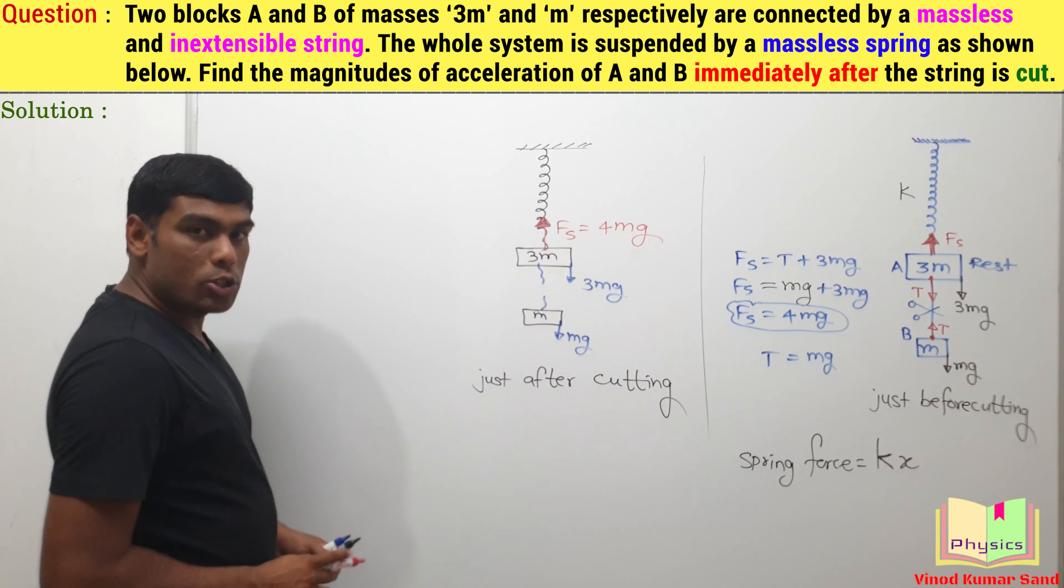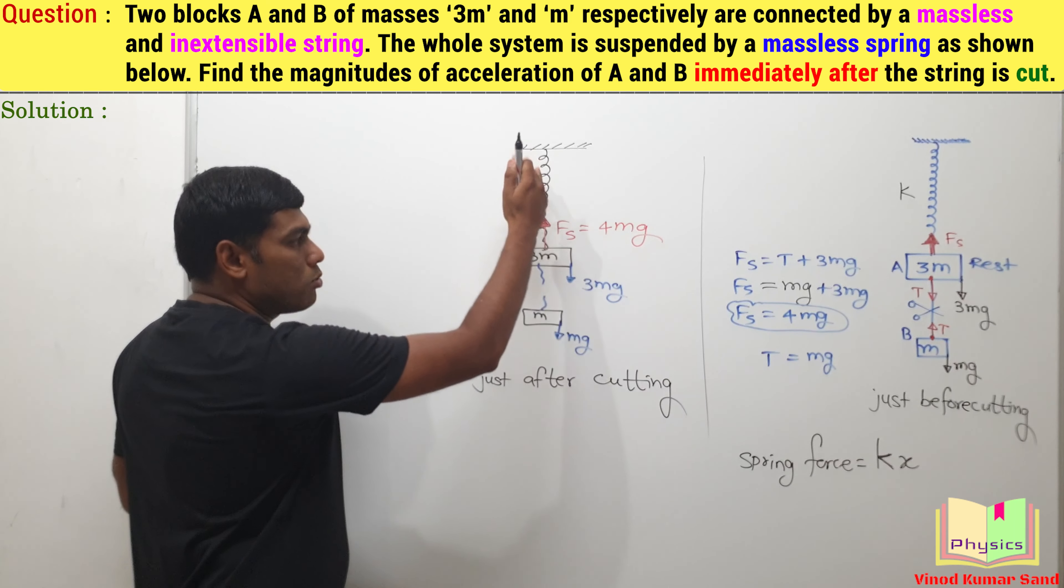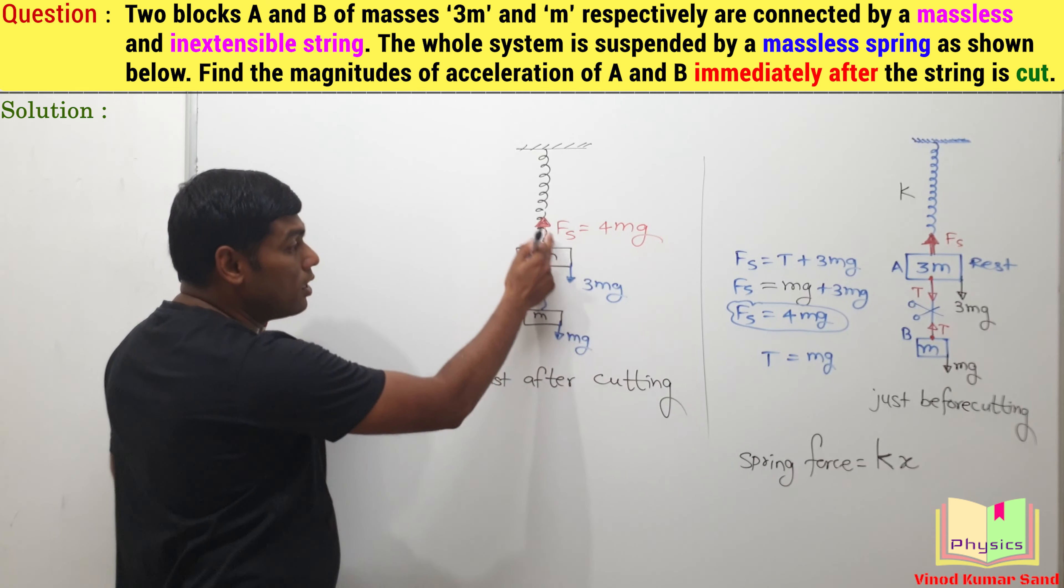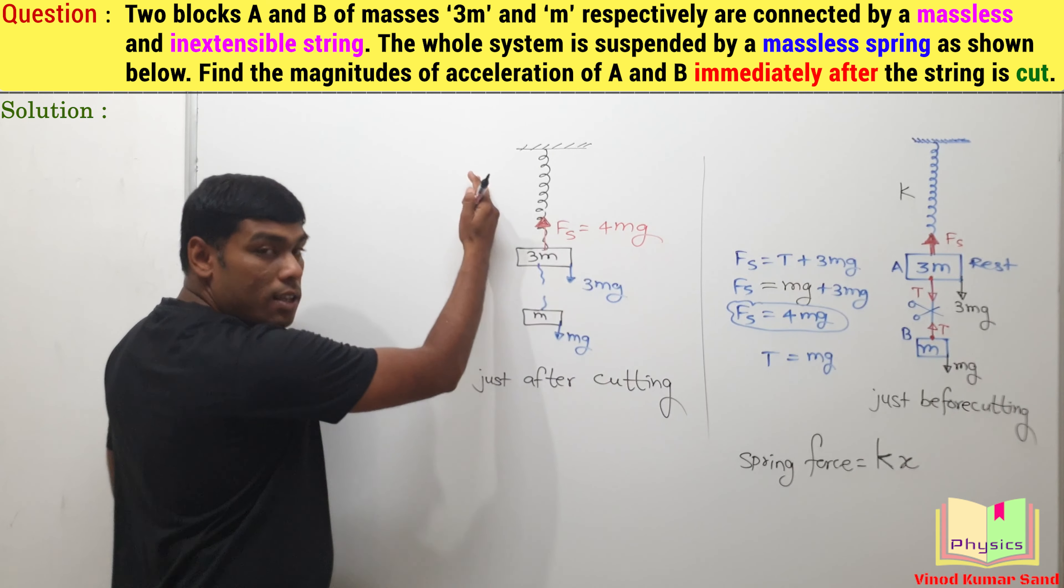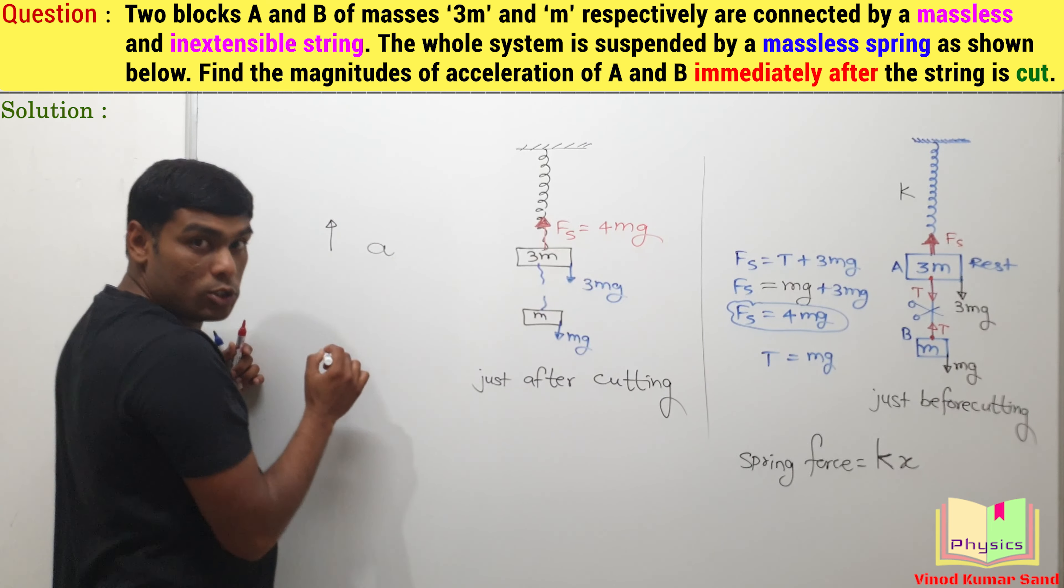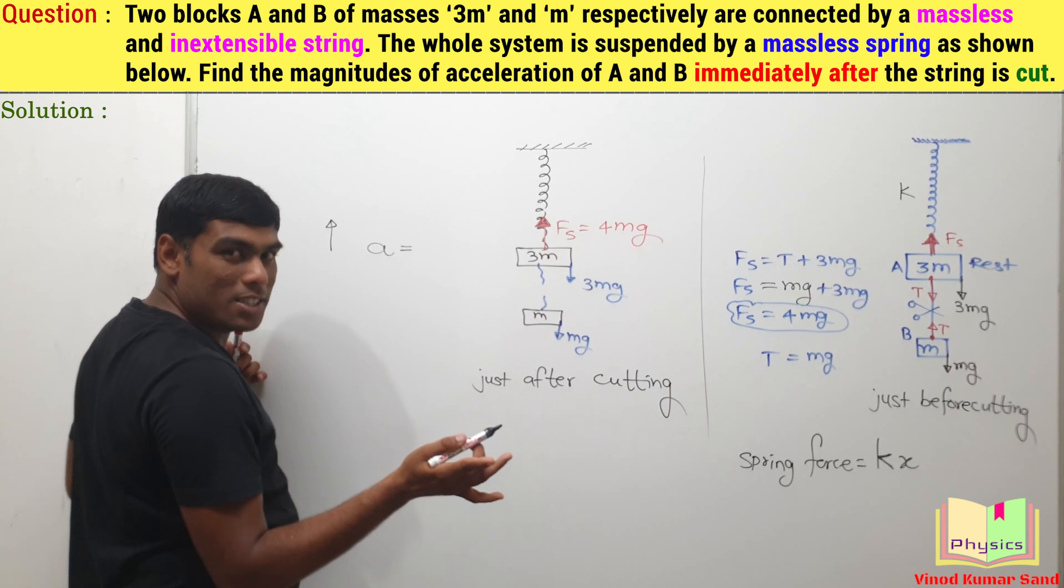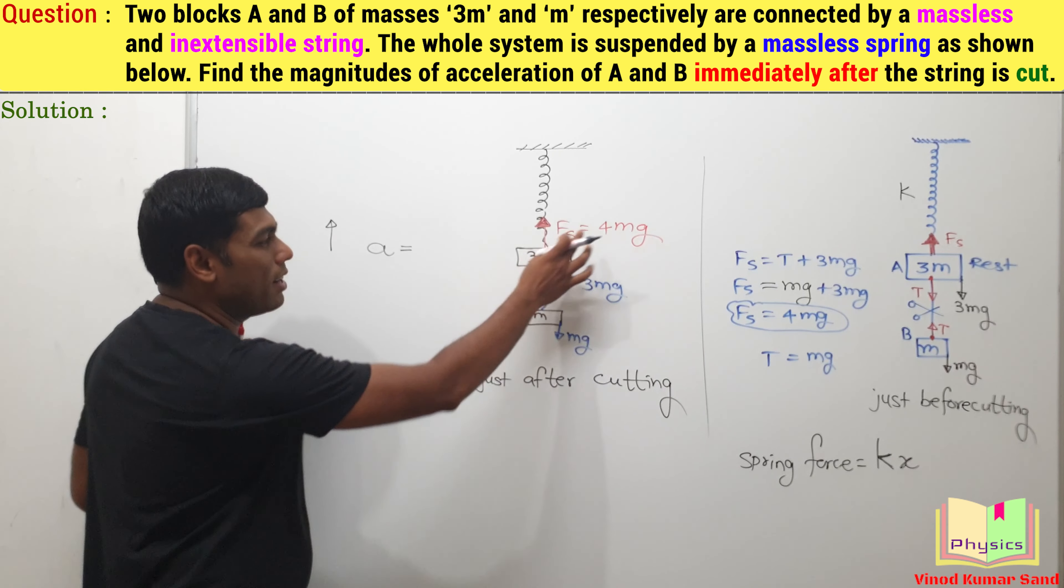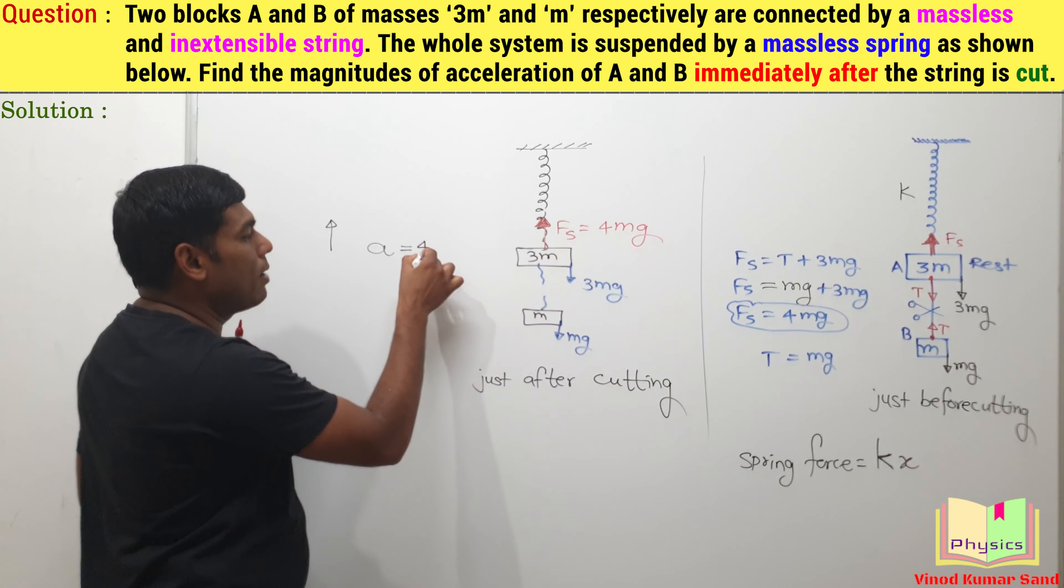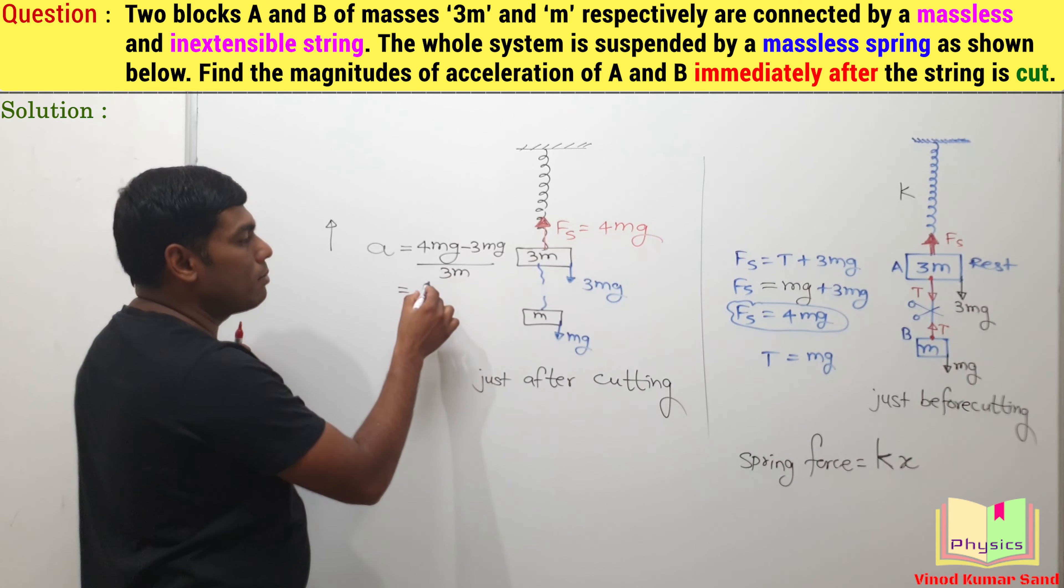Now we require the acceleration of each block. We can easily sense the upward force is 4mg, downward is 3mg. So the net force on this block is upward. Means it is going to accelerate in this direction. And that acceleration can be obtained using Newton's second law. Acceleration equals net force divided by mass. So 4mg minus 3mg divided by 3m. That acceleration comes out to be g by 3.